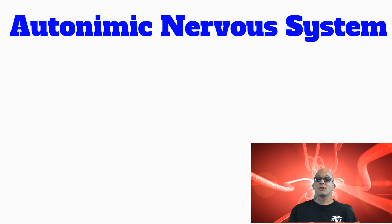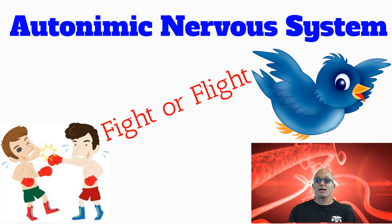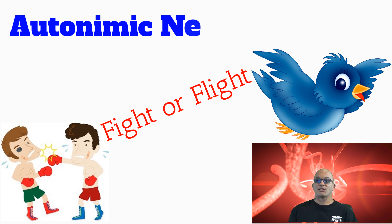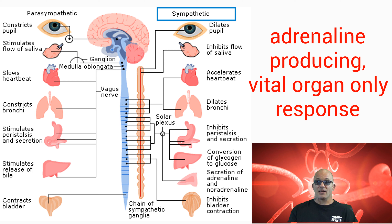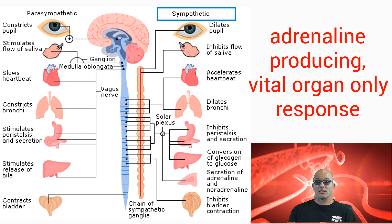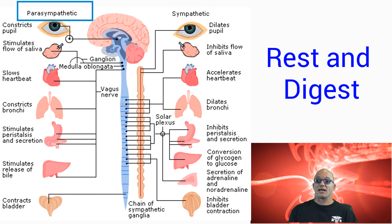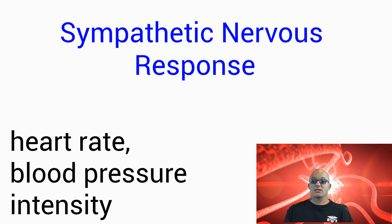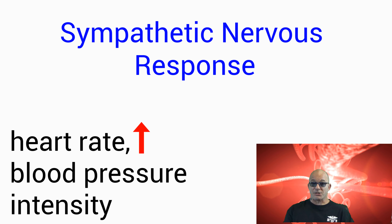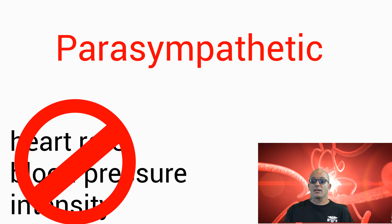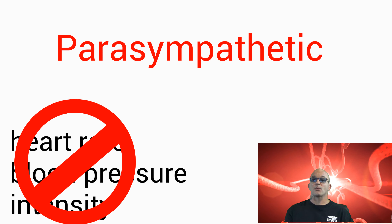The nervous system utilizes the autonomic nervous system, which is our fight-or-flight response, to release chemicals from either of its two sub-branches. The sympathetic, which can be thought of as the adrenaline-producing, vital organ-only response, or the parasympathetic, which is the rest-and-digest response. The sympathetic nervous response increases the heart rate, blood pressure, and intensity of the contractions of the heart, whereas the parasympathetic counters the actions of the sympathetic responses.